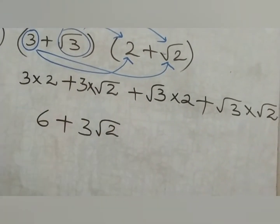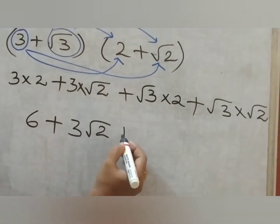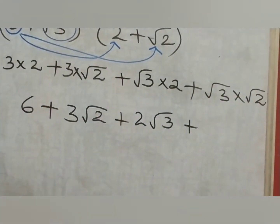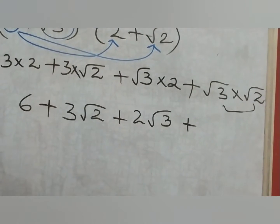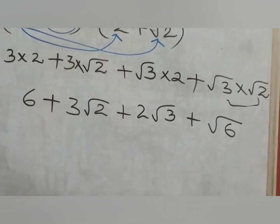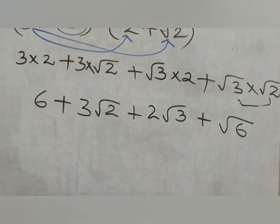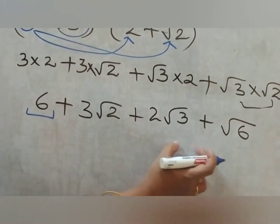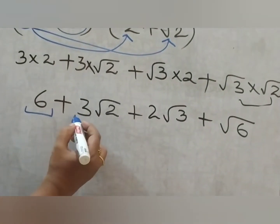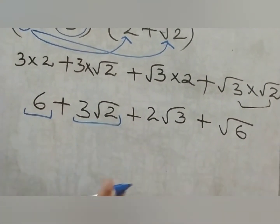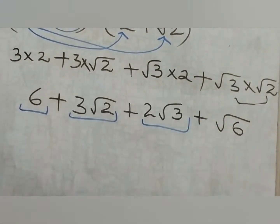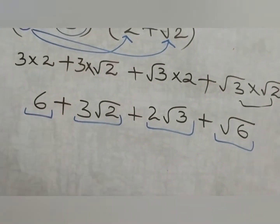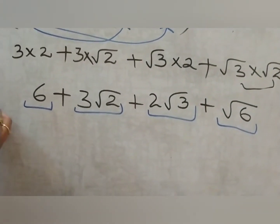You cannot multiply numbers inside and outside the root. Plus 2 into √3 is 2√3. Root 3 into root 2 — both are inside roots — so this becomes √6. Can you add any of these? 6 is a standalone number. 3√2 — does anyone else have √2? No. 2√3 is different. √6 is different. Nothing can be added, so we end up here. This is the solution children: 6 + 3√2 + 2√3 + √6.